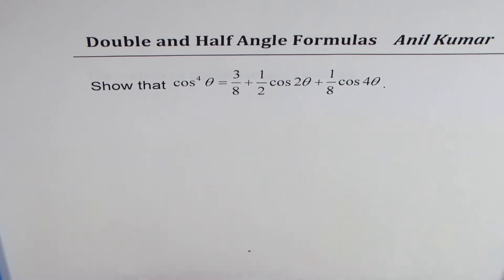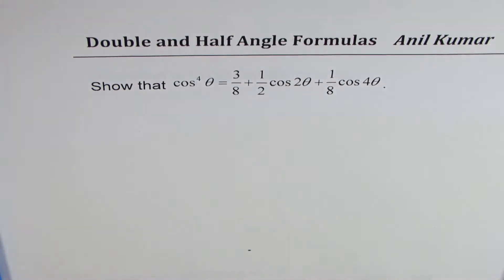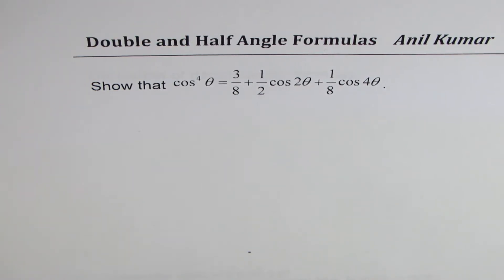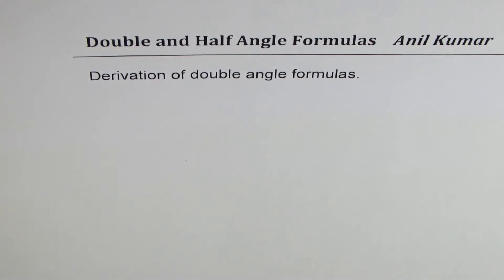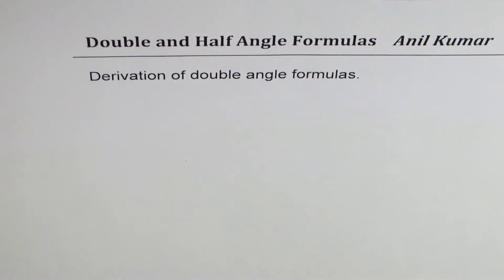As you can see, we are trying to relate cos theta with its double angle. To solve such questions, we need to understand the relation between cosine and double angle. What I will do first is derive an expression and then use this expression to solve it. We'll begin with deriving an expression for the double angle formula.